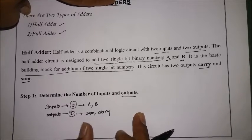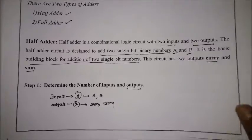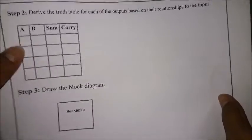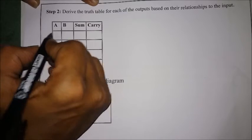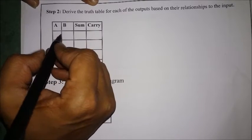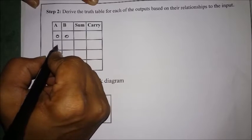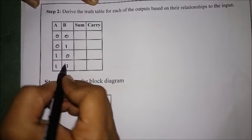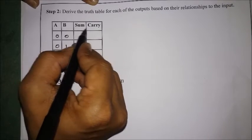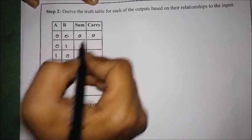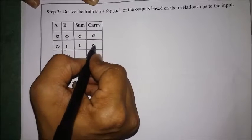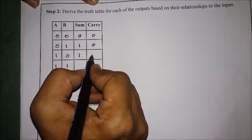After identifying inputs and outputs, the next step is the truth table. For the half adder with inputs A and B, the maximum combinations are: 0,0 — 0,1 — 1,0 — 1,1. Now adding these two bits to get sum and carry: zero plus zero gives sum=0 and carry=0; zero plus one gives sum=1 and carry=0; one plus zero gives sum=1 and carry=0.